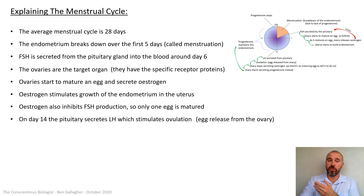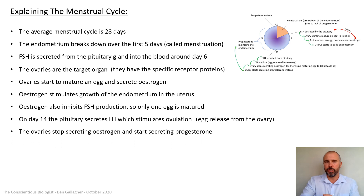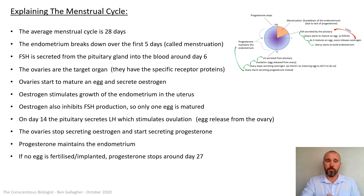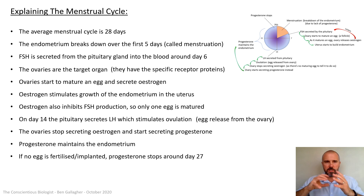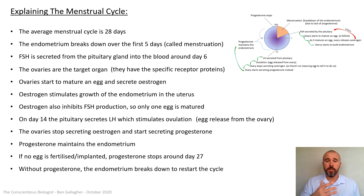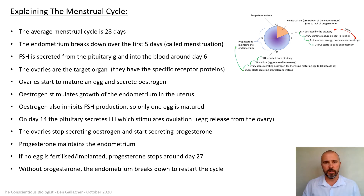On day 14, the pituitary secretes LH, which stimulates ovulation — the egg release from the ovary. The ovary stops secreting oestrogen because there's no more maturing egg, and they start secreting progesterone instead. Progesterone maintains the endometrium. If no egg is fertilized or implanted, progesterone stops at around day 27. Of course, if this woman does get pregnant, an egg will implant and that triggers different hormones — but you don't need to know about that. It's only if there isn't a fertilized egg implanting that progesterone would stop at day 27. If it stops, the endometrium breaks down and we go back to where we started. Take a screenshot of this if it's helpful.